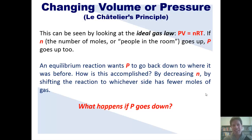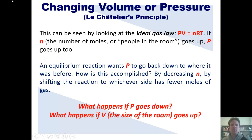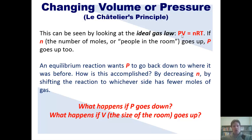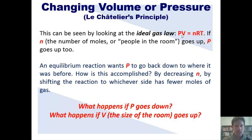Now, what about V — the volume or size of the room or container? If V goes up, imagine you're a person in a crowded room and suddenly the volume increased. Now the pressure has decreased because you have the same number of people but a lot more room. In an equilibrium setting, the reaction wants to adjust to restore balance — it wants to get the pressure back to where it was. So if you increase the volume, you decrease pressure, and the equilibrium will shift in whichever direction increases pressure, which means increasing the number of gas molecules — shifting toward whichever side has more moles of gas.